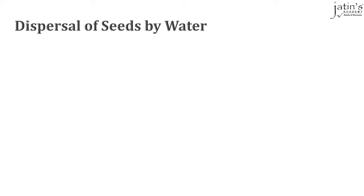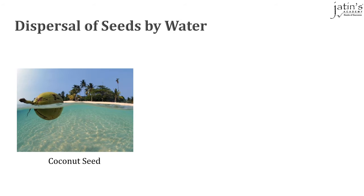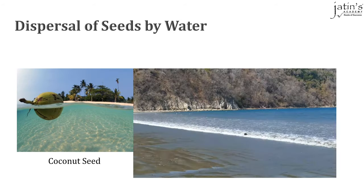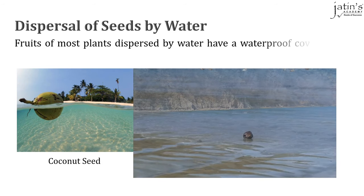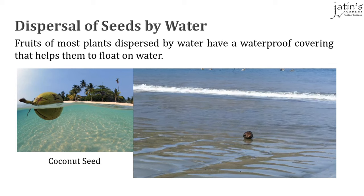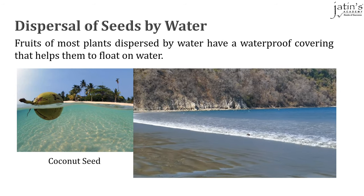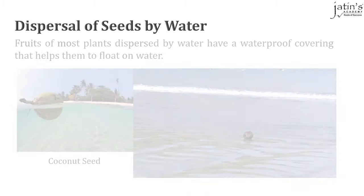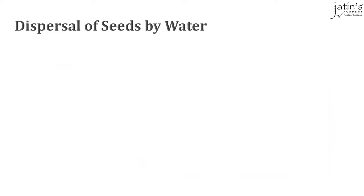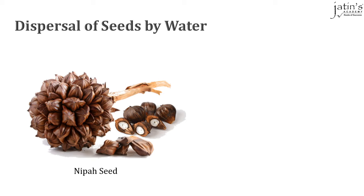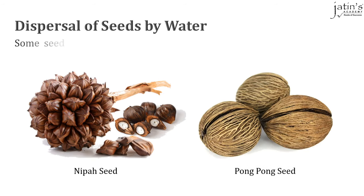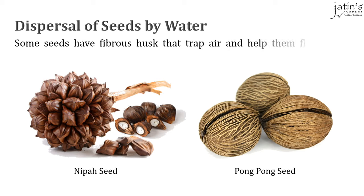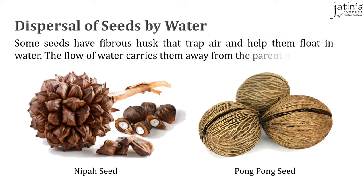Dispersal of seeds by water: here we can see a typical coconut seed getting carried away by water waves. Fruits of most plants dispersed by water have a waterproof covering that helps them float on water and get carried away to distant places. Some seeds like nipah and pong pong seeds have fibrous husks that trap air and help them float in water. The flow of water then carries them away from the parent plant.